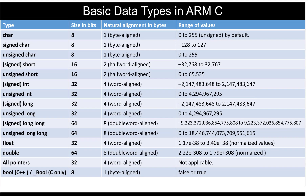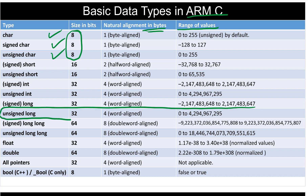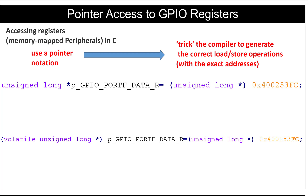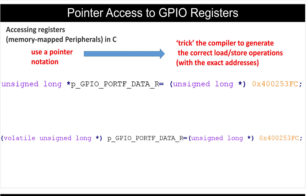Now let's look at the basic data types in ARM C. In this slide, you see different types of data: char, signed char, unsigned char, and how many bits they hold, how many bytes they use, and the range of values. The one type that is important for us in this lecture is the unsigned long type. This is a 32-bit type, it uses 4 bytes, and this is the range it represents. We will be using this unsigned long to declare our pointers. Now let's look at the pointer access to GPIO registers.